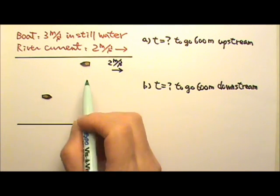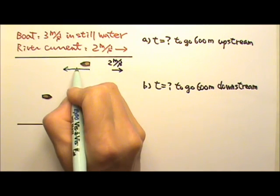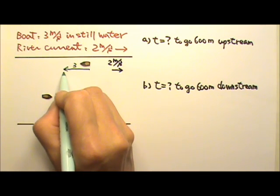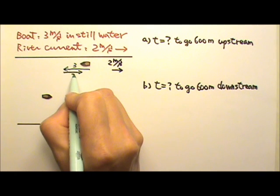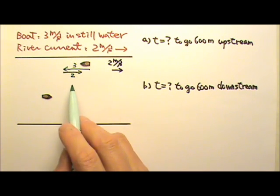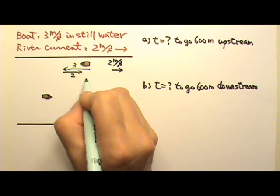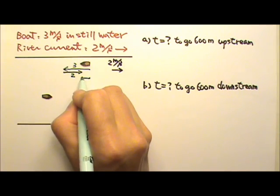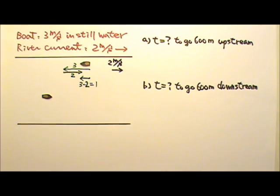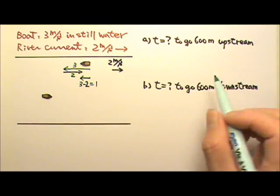When the boat travels upstream, it gets two velocities: one by itself at 3 m per second, and one from the river current, which carries the boat downstream at 2 m per second. Adding those two velocities tail to tip — starting here, ending there — the net velocity would be 3 minus 2, which is 1 m per second upstream.